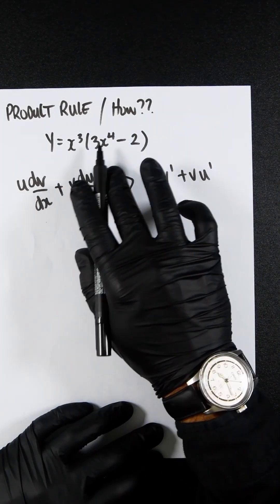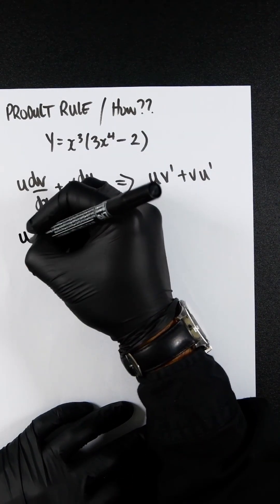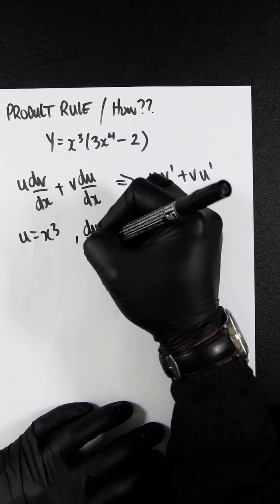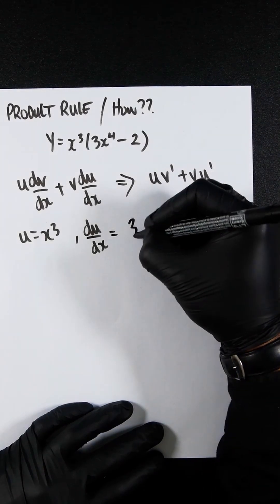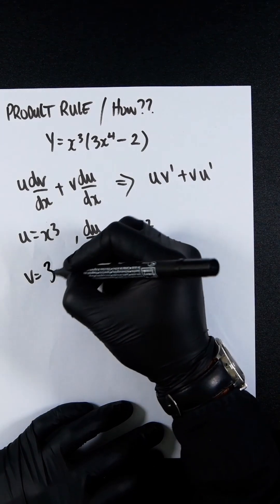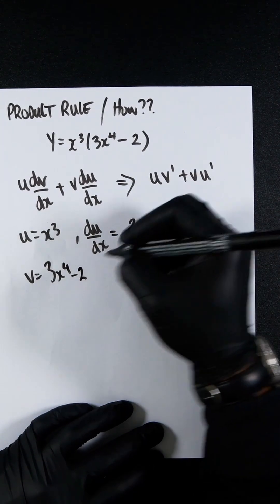Let's now assign u and v. So u would be x cubed and then du dx would be 3x squared. Then we have v, which is everything here, 3x to the power of 4 minus 2.